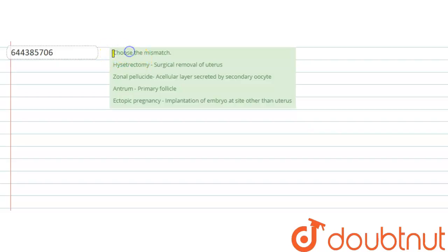a question that says choose the mismatch. We are having four options. Option one says hysterectomy: surgical removal of uterus. Option two says zona pellucida: a cellular layer secreted by a secondary oocyte. Option three says antrum: that is primary follicle. And the last option says ectopic pregnancy,